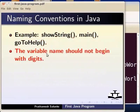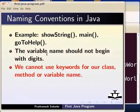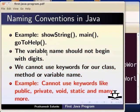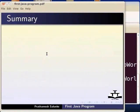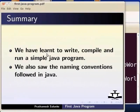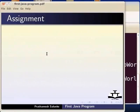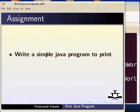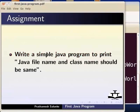For variable names, also use camelCase. Do not use Java keywords as class, method, or variable names. Examples of keywords include: public, private, void, static, and others. This concludes the naming convention for Java. The Java file name and class name should be the same.